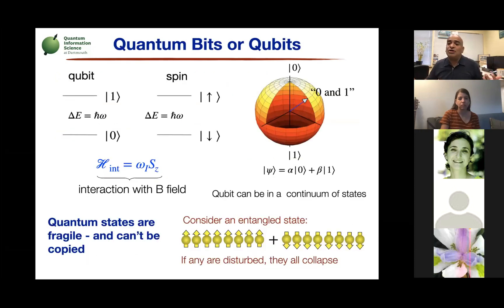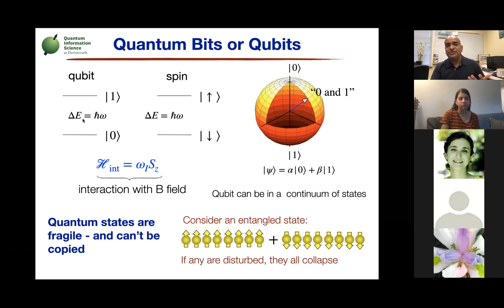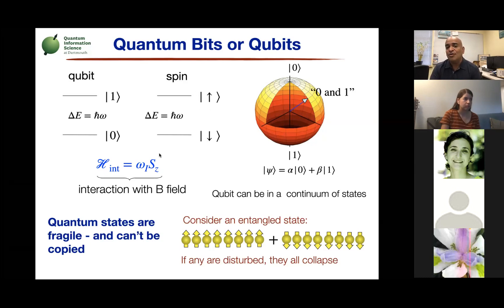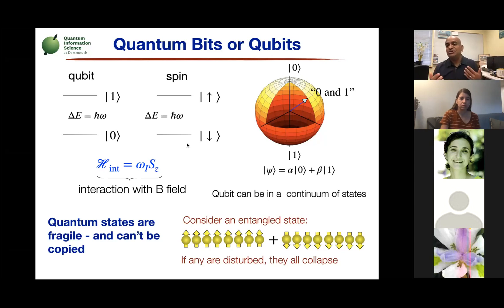When quantum information came along, NMR became a really good test bed for testing these ideas. A qubit is a two-level system with an energy difference of H-bar omega, and the two states of a spin-half particle — spin up and spin down — are also separated by H-bar omega where omega is the Larmor frequency. So there's a nice mapping between these two systems, and using NMR as a test bed for quantum information was almost the first thing you would try.